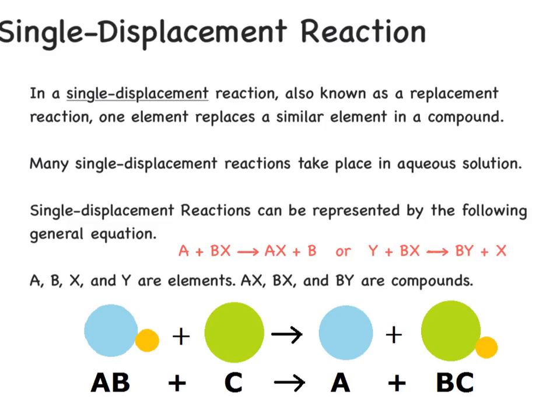In a single displacement or single replacement reaction, one element replaces a similar element in the compound. If the single element is a metal, it will replace the metal in the compound, and if the single element is a non-metal, it will replace the non-metal in the compound. Many of these reactions take place in aqueous solutions, where a solid has been dissolved in water. Single displacement reactions can have the generic formula A plus BX yields AX plus B, or Y plus BX yields BY plus X.